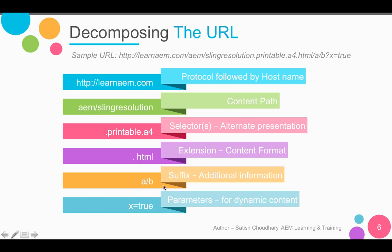Continuing the URL breakdown: /a/b is the suffix, providing additional information — for example, client-specific, vendor-specific, or different branding configurations. Finally, x=true is a URL query parameter, generally used for dynamic content. It is advisable not to use too many URL parameters because that kills the dispatcher cache. So the whole URL breaks into five or six pieces: protocol, hostname, content path, selectors, extension, suffix, and parameters.